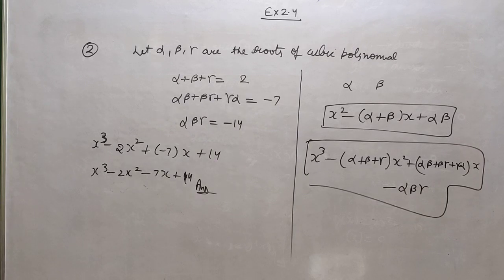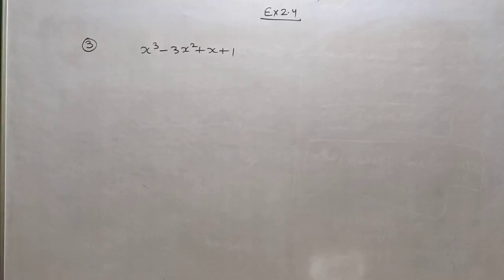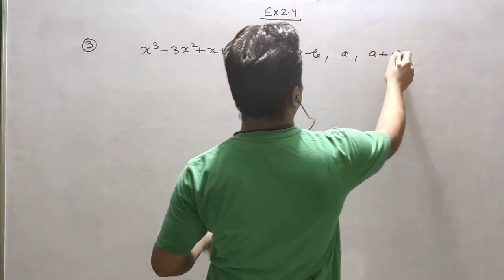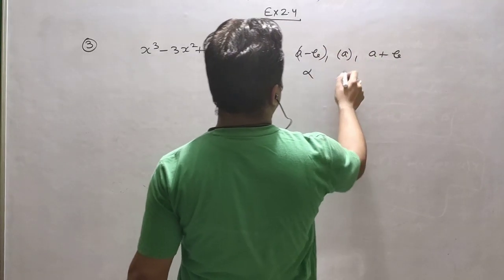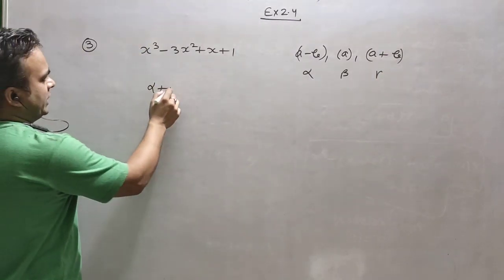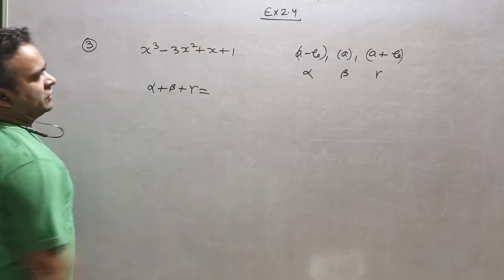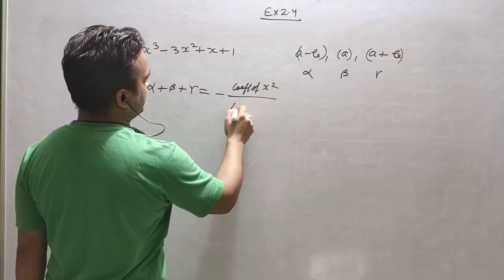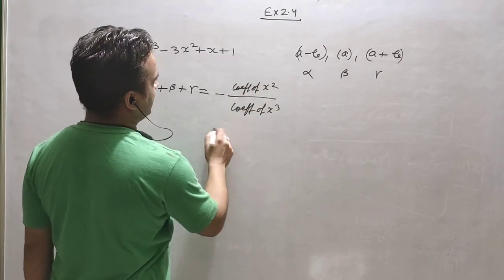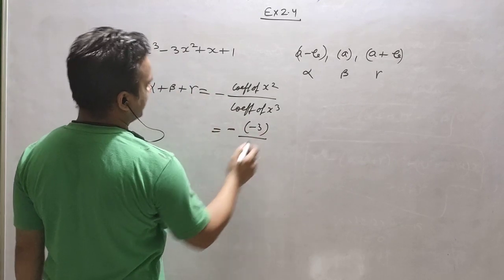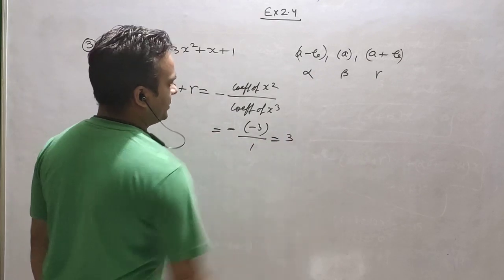Question number 3: a cubic polynomial is given with zeros in the form a minus b, a, and a plus b — this is alpha, beta, gamma. If I find alpha plus beta plus gamma, it equals minus (coefficient of x squared) upon (coefficient of x cubed). It is minus times minus 3 over 1, which gives plus 3.